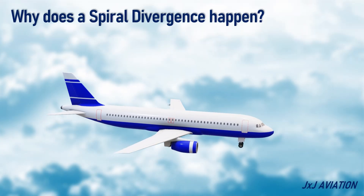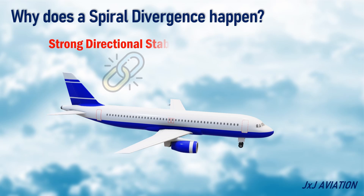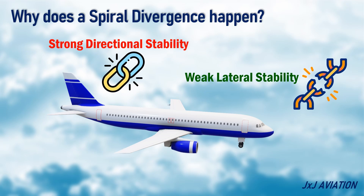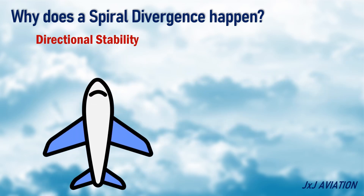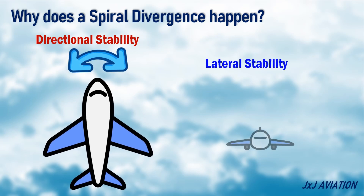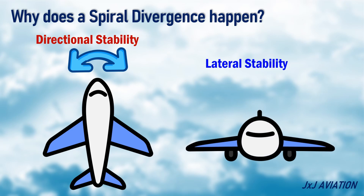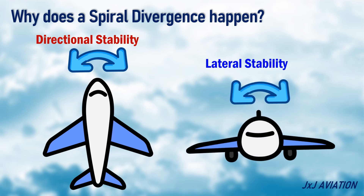Why does a spiral divergence happen? A spiral divergence happens if an aircraft has strong directional stability and weak lateral stability. Directional stability refers to an aircraft's ability to maintain a particular direction or heading after a disturbance. Lateral stability refers to an aircraft's tendency to roll back or bank to its original attitude after a disturbance.